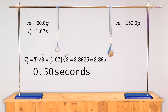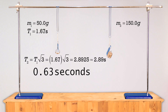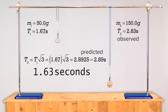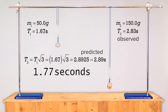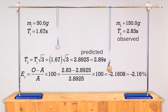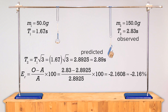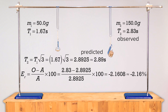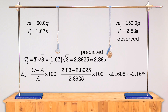The period we observe when we increase the mass to 150 grams is 2.83 seconds, which is almost, but not quite, 2.89 seconds. Using the relative error equation, we can show that our observed value is roughly 2.16% less than our predicted or accepted value for the new period with triple the mass.